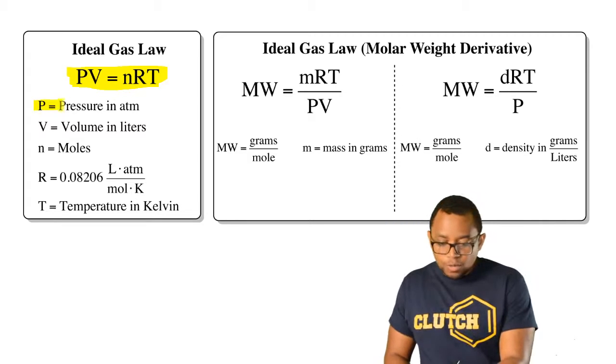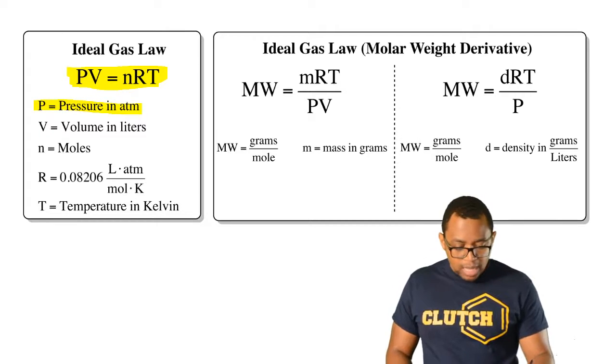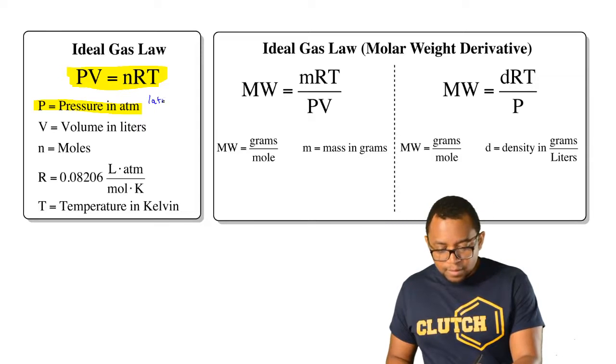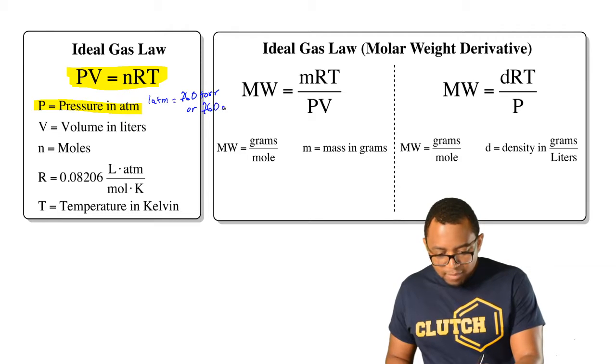Here pressure will be in atmospheres and remember the typical types of conversions here are one atmosphere equals 760 torr or 760 millimeters of mercury.